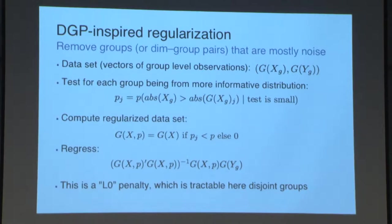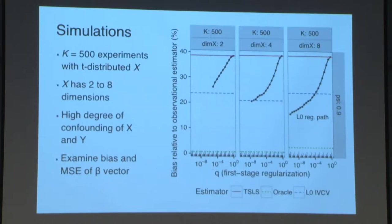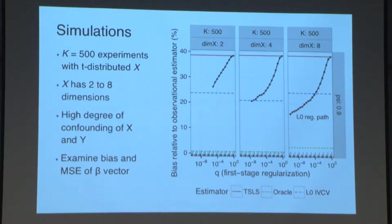Normally L0 penalties are not tractable, but with these disjoint groups, the independence relationship makes it possible to have a single simple-to-compute regularization path. In simulations with 500 experiments, t-distributed x, dimension of x varying from 2 to 8, and high confounding, we examine the bias and mean squared error of the beta vector. As we remove more experiments by using a smaller p-value threshold, we reduce the bias. Two-stage least squares bias in this setting would be 40% of the observational analysis — it improves things but still has substantial bias, while the regularization allows further reduction.